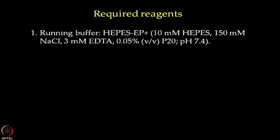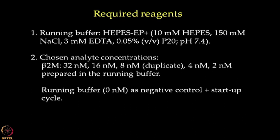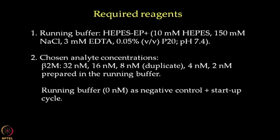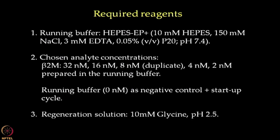In today's kinetic assay experimental setup, we will be using HEPES-EP plus as the running buffer. We will be preparing a total of 5 concentrations of beta microglobulin starting from 32 nanomolar, 16 nanomolar, 8 nanomolar, 4 nanomolar, and 2 nanomolar using 2-fold serial dilution in the running buffer and 8 nanomolar concentration in duplicate. We will be using HEPES as zero concentration negative control for the reaction as well as for the initial startup cycles. For regeneration solution, we will be using 10 millimolar glycine pH 2.5. We shall now proceed to set up our experiment for kinetic analysis.